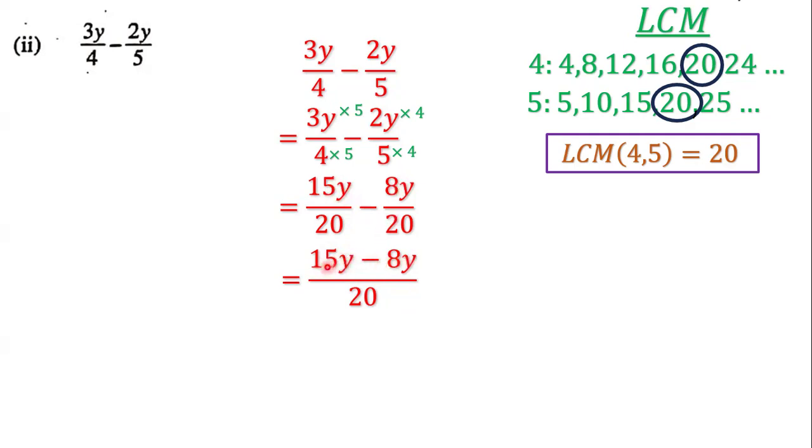And when we subtract, we have 15y minus 8y, which gives us 7y. So we have 7y all over 20. And this is our final answer. So 7y over 20 is the answer for this question.